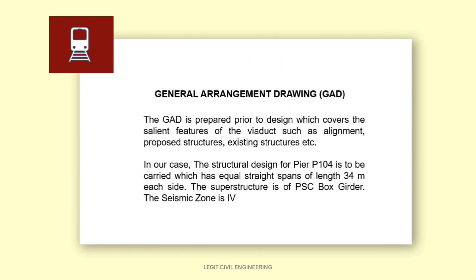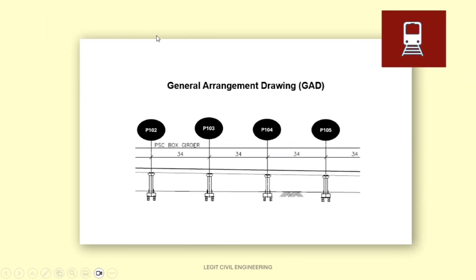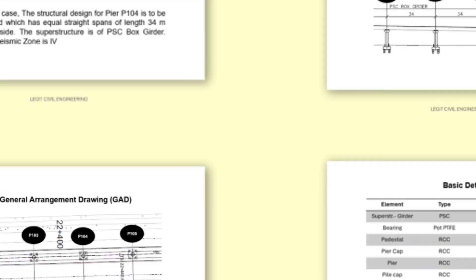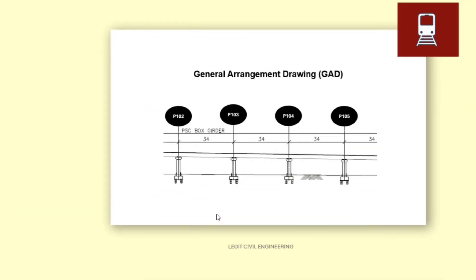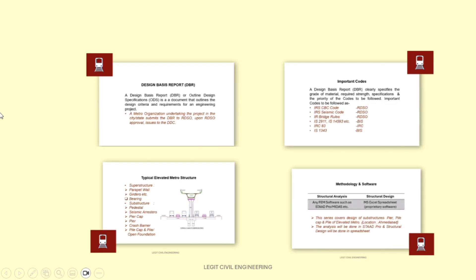General Arrangement Drawing pehle bana li jaati hai — after survey, after you have conducted the survey. Iske basis par jo humara alignment hai, jo bhi span hai, jo bhi aaspaas ke structures hain, woh GAD mein dikhate hain. Iske saare levels mention hote hain — rail level aur jintak bhi aaspaas ke structures hain. Is particular series mein hum P103 ko design karenge, jiske dono taraf left-hand span aur right-hand span dono hi 34 metres ke hain. Iska superstructure PSC box girder hai. Pier hoga, ismein piles hongi 1.2 metres ki, aur pile cap hoga roughly 5.3 by 5.3 ka. GAD mein plan view hota hai, span mention hote hain aur type of superstructure bhi.